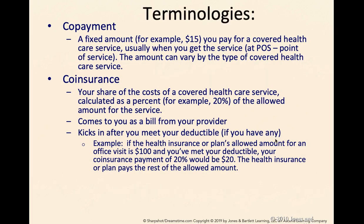A copayment is a fixed amount and is a form of out-of-pocket expense — for example, $15. If you go see a health care provider and have a copayment of $15, you owe it at point of service. When you register at the front desk, they will ask for your copay before you even see your doctor. If you have a flexible spending account or health savings account, you can charge that $15 copay to it. Regardless of what type of health plan you have, if you have a health savings account, you can use it to pay for your copayment or coinsurance.